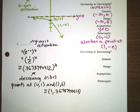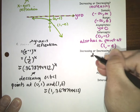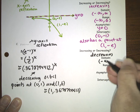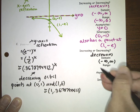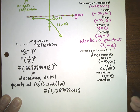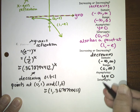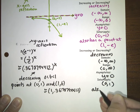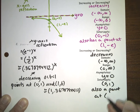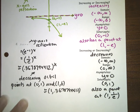All I need to do is graph this. This is decreasing. The domain did not change. The range is 0 to infinity. The asymptote is still at y equals 0 since there were no vertical shifts. The intercept is at (0, 1), and there is also a point at (1, 1/e).